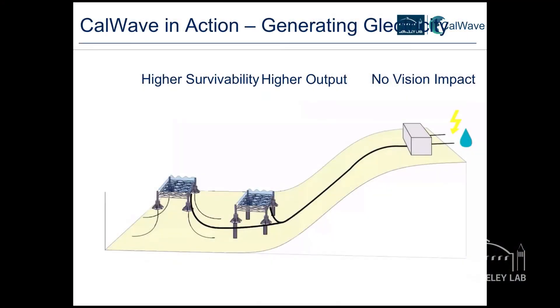Our system has three major advantages. The first is higher survivability — the major drawback in the industry has been high slamming forces on the surface, so the fact that the system works efficiently submerged is the primary advantage. The second is higher efficiency because we're based on this natural phenomenon. There's also a trend in wind energy where blades get bigger and bigger — similarly, our device has the capability to upscale because the power scales with the device width. The third advantage is visual impact: the fact that it's submerged just comes with this major benefit.